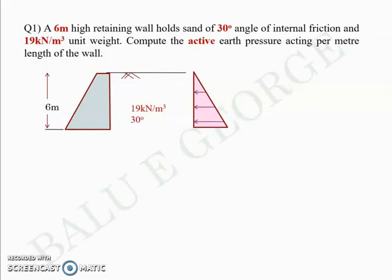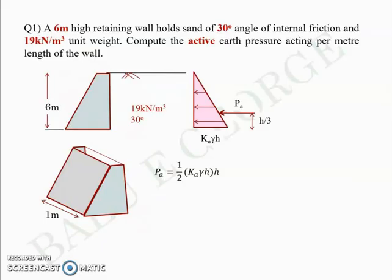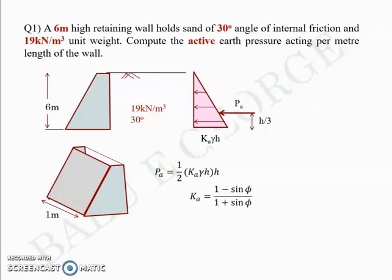The pressure attains a value of Ka·γ·H at the bottom. Pa is the area of the triangle with base Ka·γ·H and height H, acting at a height of H/3 from the bottom. Pa per meter run equals Ka·γ·H/2, i.e., the area of the triangle. Ka is given by (1 − sin φ)/(1 + sin φ), gamma is 19 kN/m³, and H is 6 m.